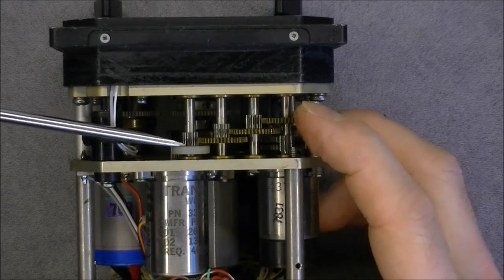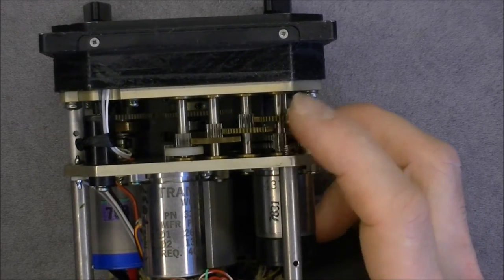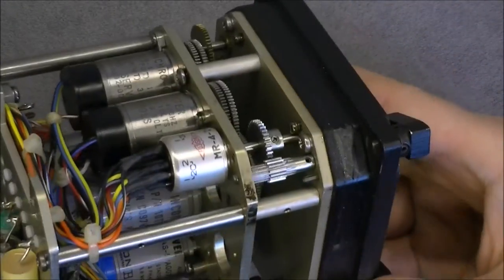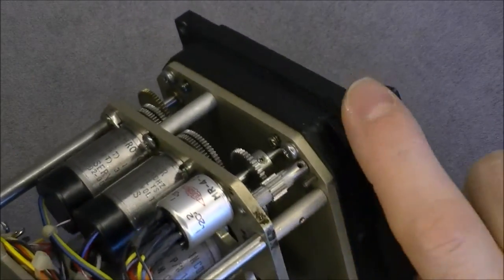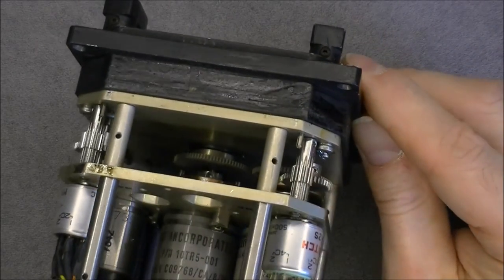But here we have a plastic gear. Quite interesting. Why did they put a plastic gear in here? You can see the front piece is quite thick and it is bolted to the faceplate of the instrument.